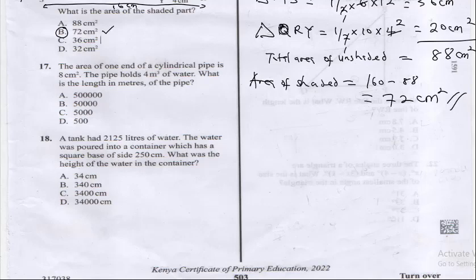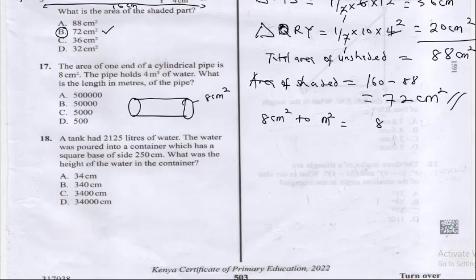In order to solve this question, this is what our pipe looks like. The area of one end is 8 cm squared. The first thing we are going to do is convert 8 cm squared to meter squared. This is going to be 8 over 100 times 100.